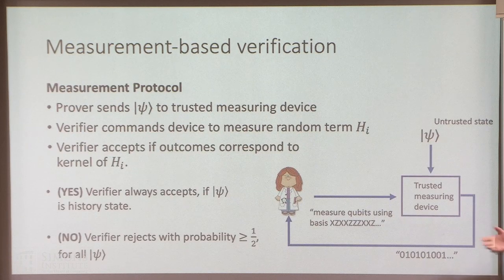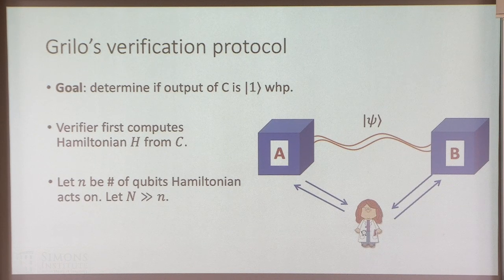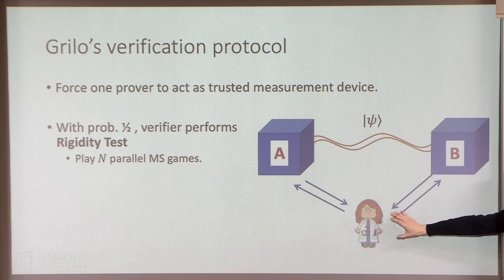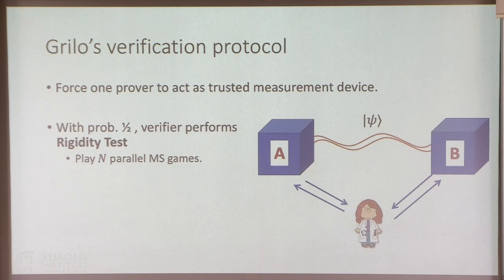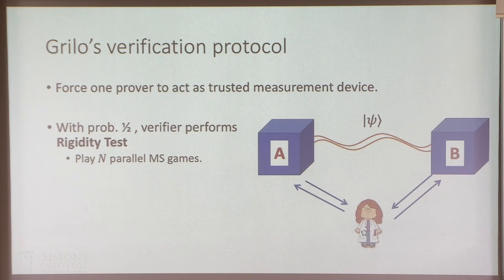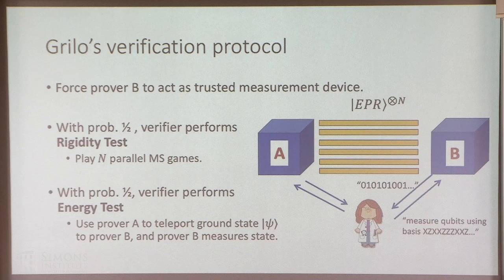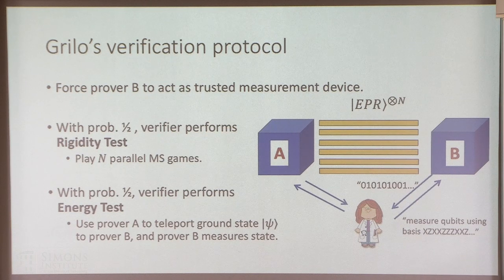Now, in the multi-prover setting we don't have a trusted measurement device — but we can use rigidity to our advantage. This purely classical verifier will force one of the provers to act as a trusted measurement device. The protocol is simple: with probability 1/2, the verifier performs a rigidity test — playing n magic square games. If the devices pass with high probability, they must share many EPR pairs and be performing X and Z measurements. The other half of the time, the verifier performs an energy test, using the now-certified trusted prover.